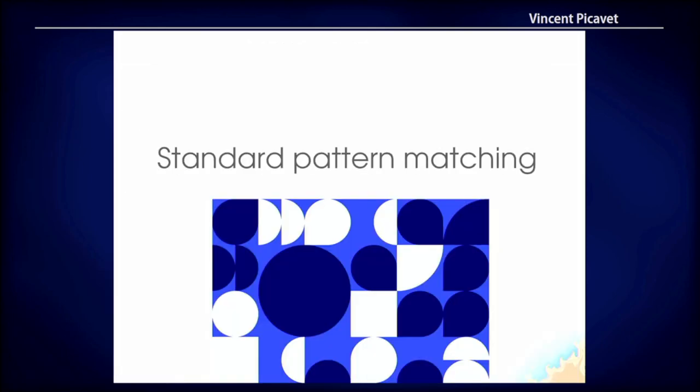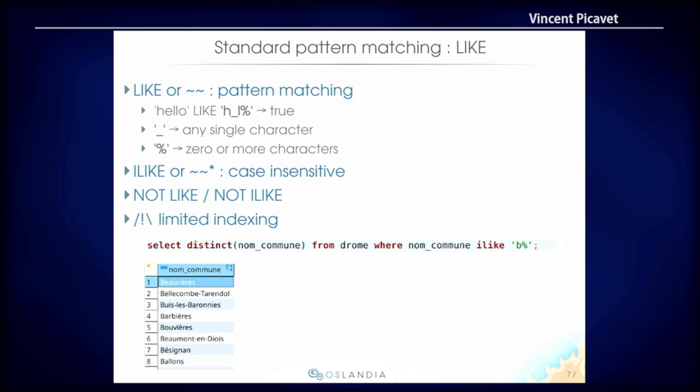Let's start with standard pattern matching, something you probably already use. That's the LIKE keyword in SQL. You also have the operator which is two tildes, and it's used for pattern matching just like in the query you see. You can select all communes from our dataset where the name of the commune begins with B. You have specific characters to match any single character or any zero or more characters. You also have the ILIKE variation which is case insensitive, and you can reverse the search. Just be careful with indexing — if you use reverse search, it won't be indexed by standard indexes, so you would need a different approach.